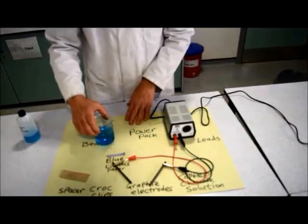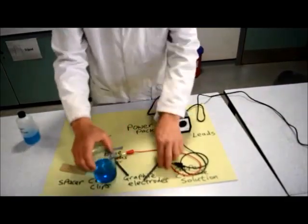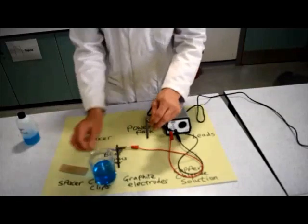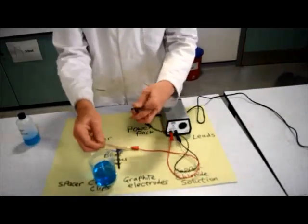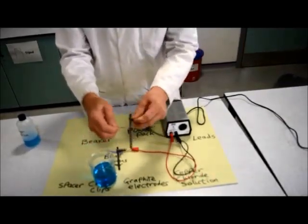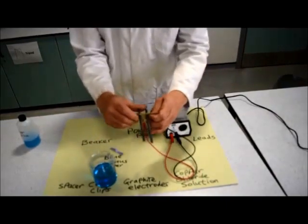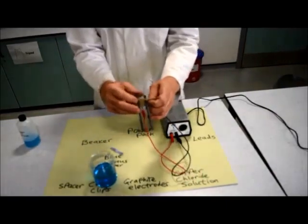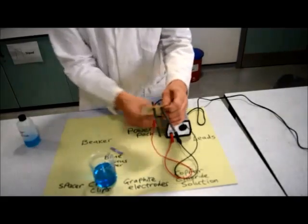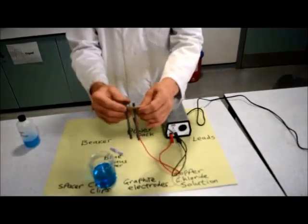It's very important that when we put this together, the electrodes don't touch. Here we've got a spacer, and we're going to insert the electrodes into the spacer so it keeps them apart. You don't want these touching when you turn the power on, otherwise you'll get a short circuit.